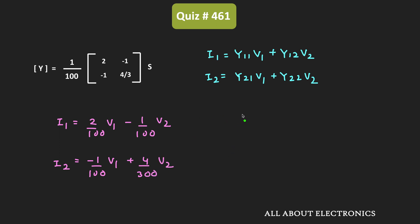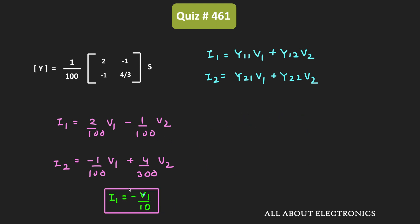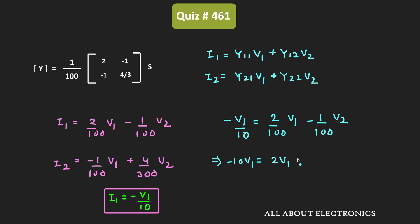Earlier we found V1 = −10·I1, which means I1 = −V1/10. Substituting this into the first expression gives −V1/10 = (2/100)·V1 − (1/100)·V2. Multiplying through by 100 yields −10·V1 = 2·V1 − V2, and therefore V2 = 12·V1. This gives us the relation between V2 and V1.